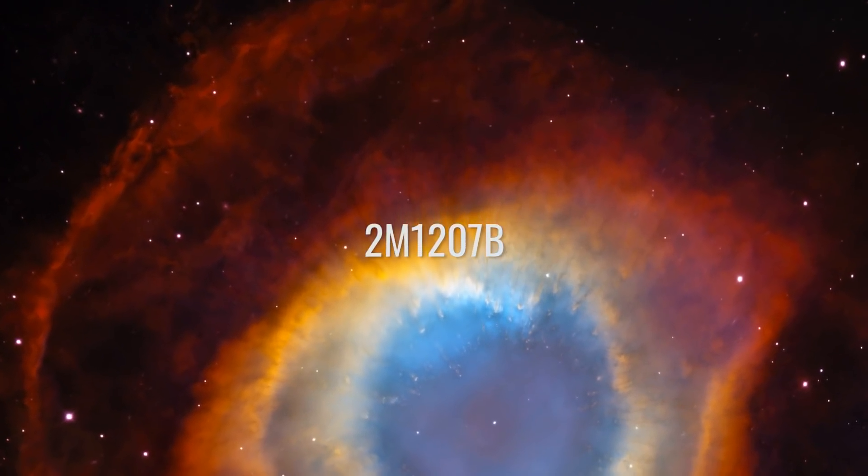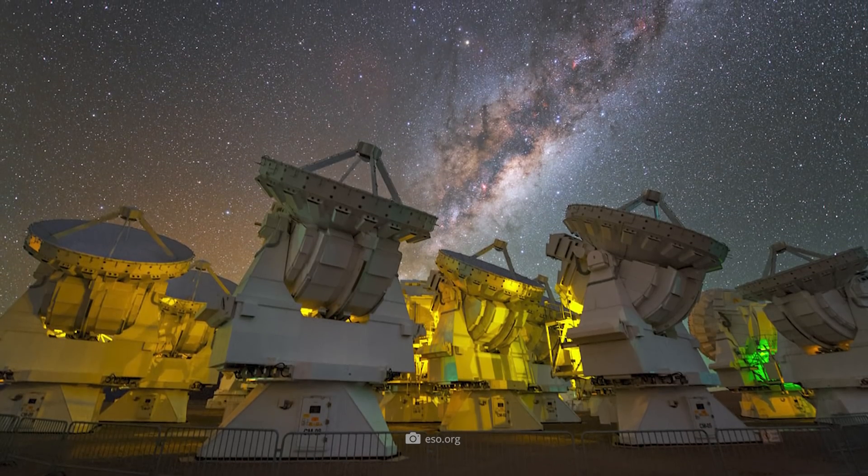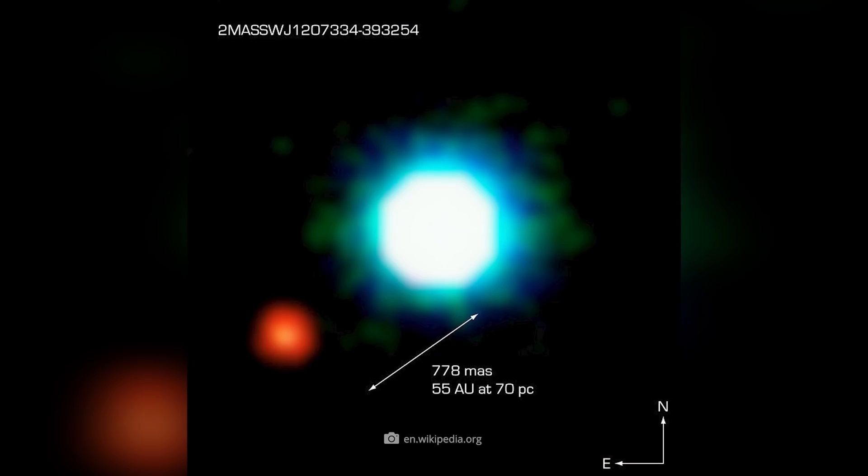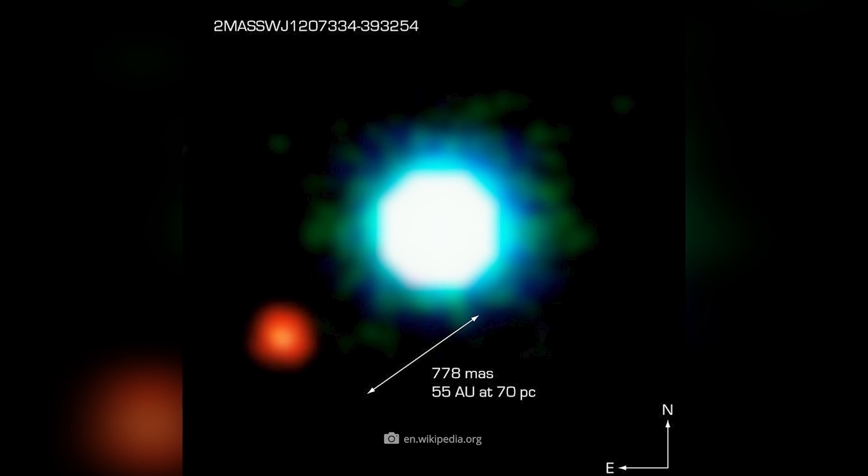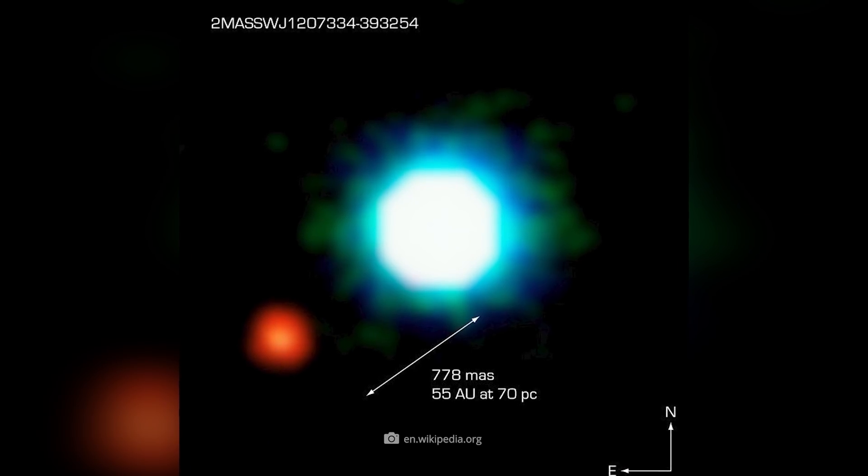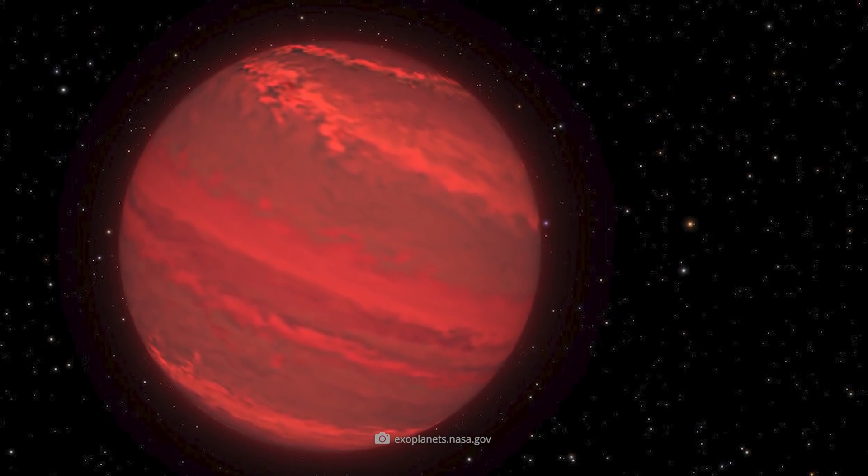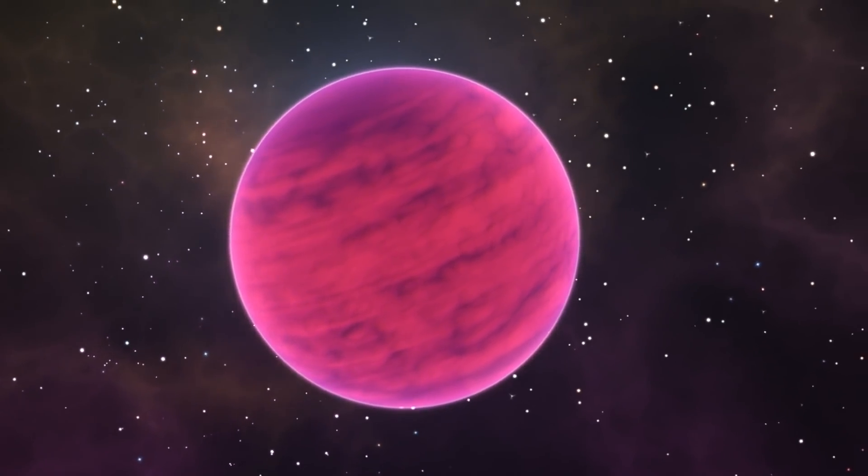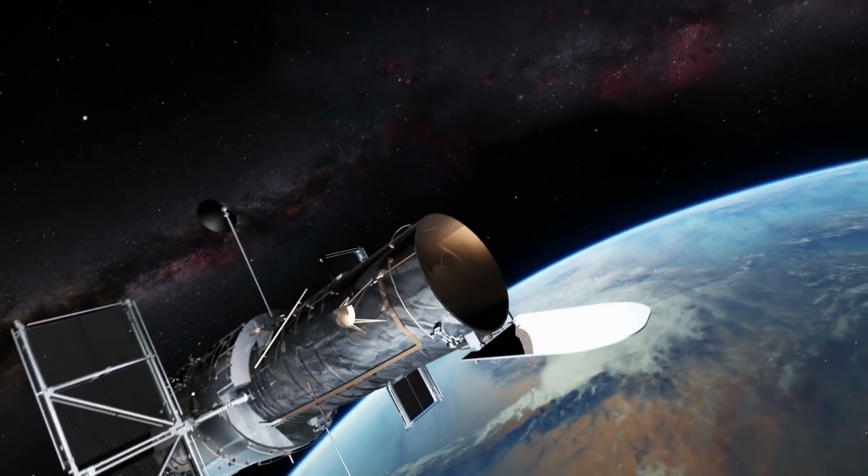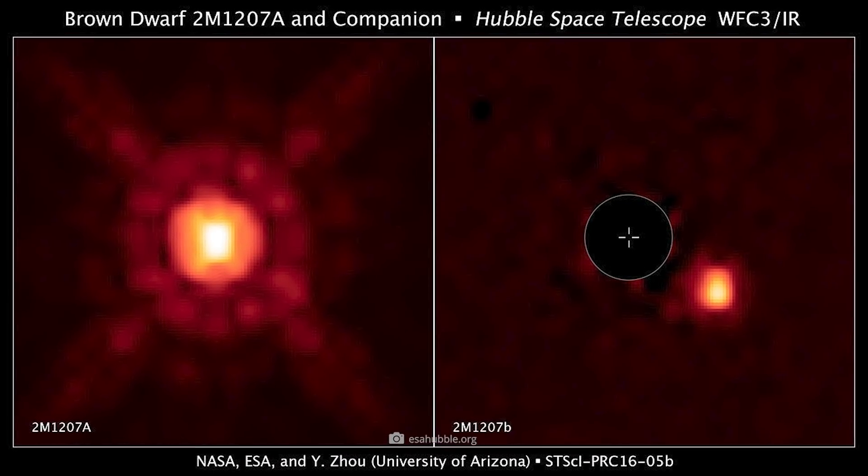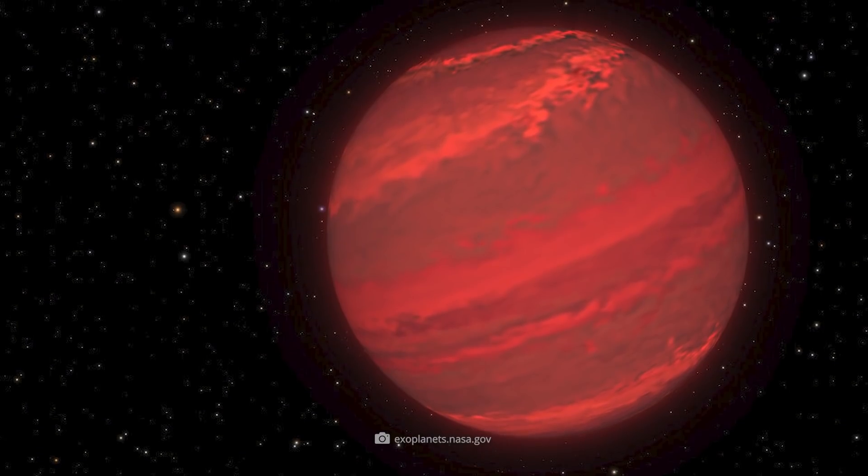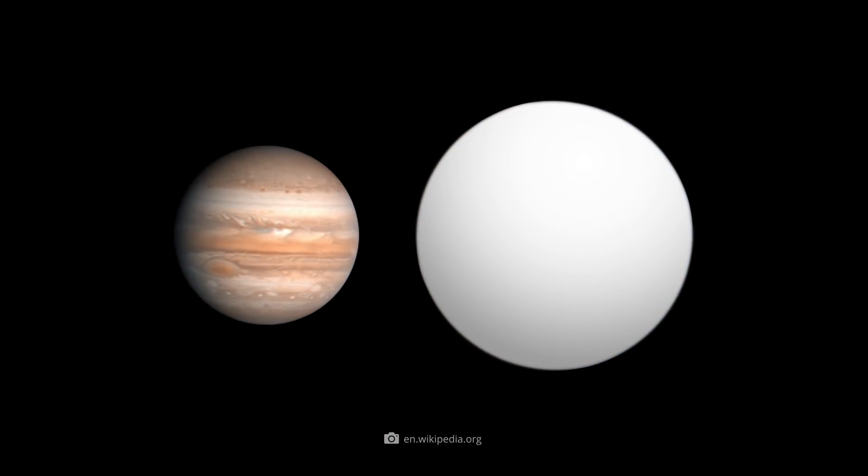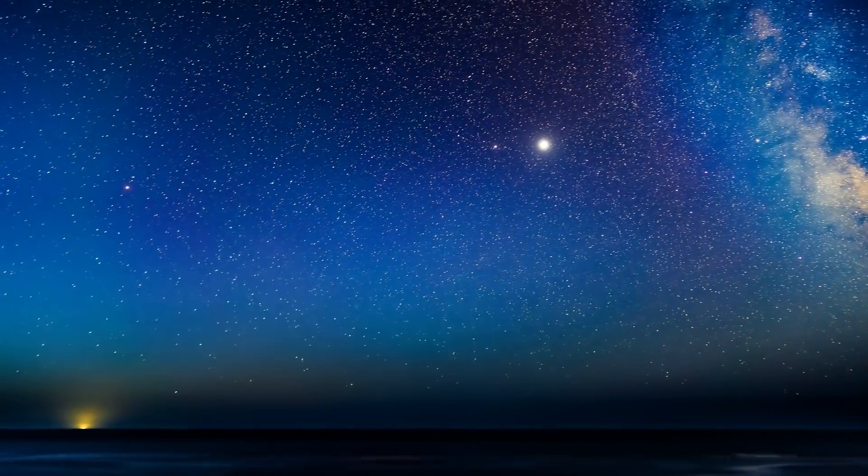2M1207B: It was 2004 when a team from the European Southern Observatory discovered the astronomical object 2M1207B using the Very Large Telescope. In fact, the planetary mass object orbiting a brown dwarf in the constellation Centaurus was one of the first exoplanet candidates to be observed directly. Analysis of the corresponding infrared images suggested that it is a very hot gas planet with an estimated surface temperature of 2,372 degrees Fahrenheit and 3 to 10 times the mass of Jupiter.